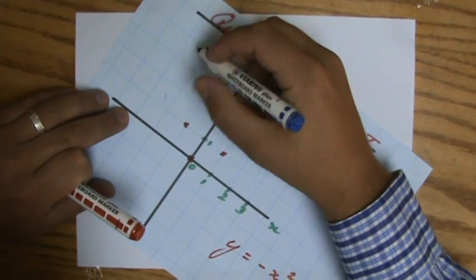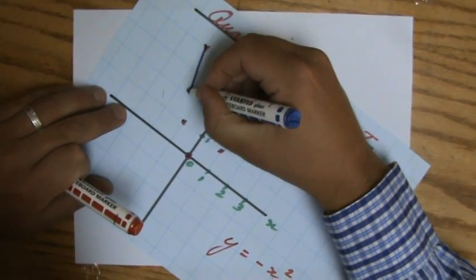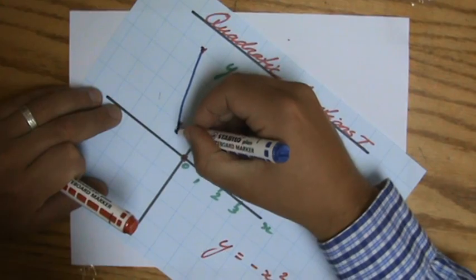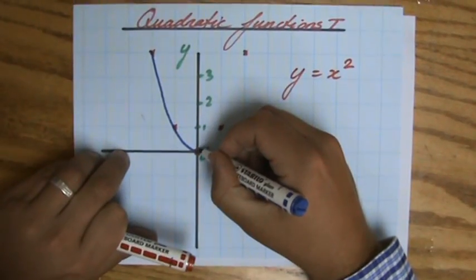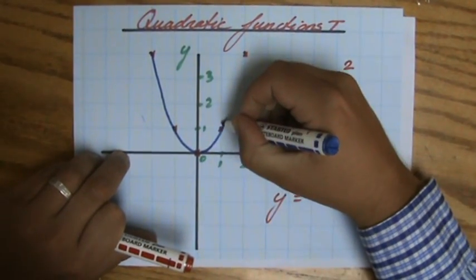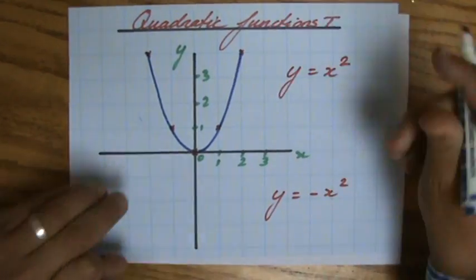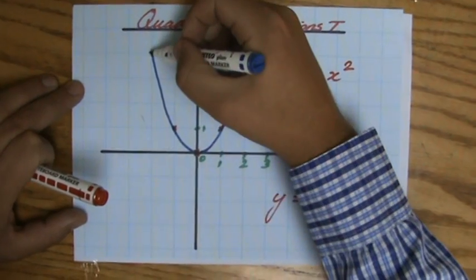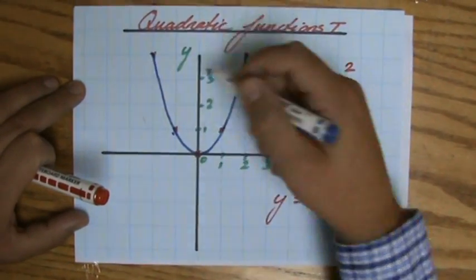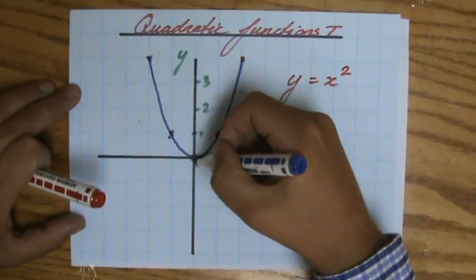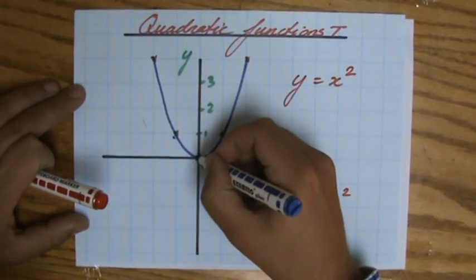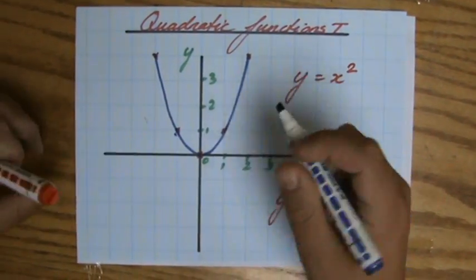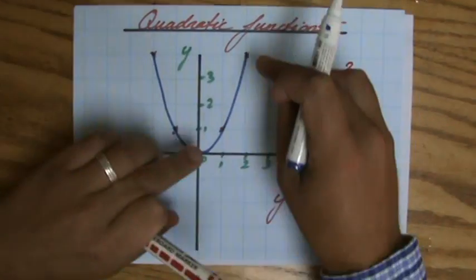It's a lot easier with a pencil than with a marker, but I'm going to try the best I can. It needs to be a smooth curve, not too pointy. Do not just connect the dots, but it needs to be a smooth curve where I have some sort of minimum here. But this side is symmetrical to that side.